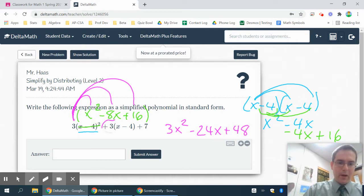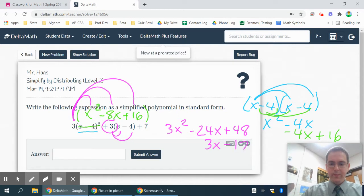Then I'm going to have to take this 3 and distribute it into this parenthesis. So that's going to give me 3x and minus 12. And then I have a plus 7 on the end.